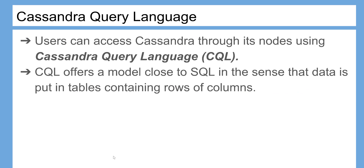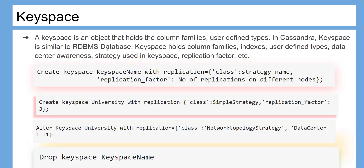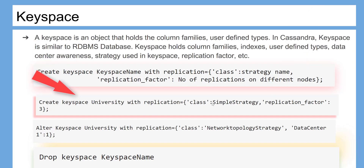Users can access Cassandra through its nodes using Cassandra Query Language (CQL). CQL offers a model close to SQL in the sense that data is put in tables containing rows of columns. A keyspace is an object that holds the column families. In Cassandra, a keyspace is similar to a DBMS database. Keyspace holds column families, indexes, user-defined types, data center awareness, strategy used in keyspace, replication factor, etc. The following are commands for creating, altering, and deleting keyspaces in Cassandra, which you need to understand well to master Cassandra database.